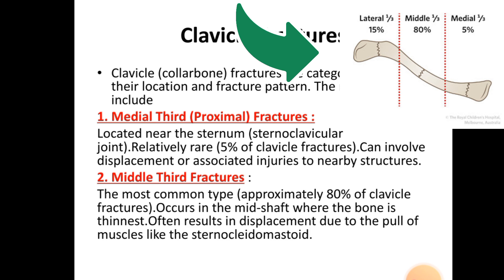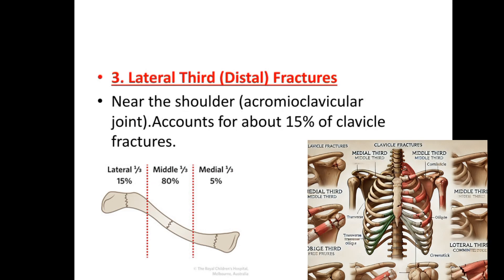Middle third fractures often result in displacement due to the pull of muscles like the sternocleidomastoid. The third type is the lateral third or distal fracture, located near the shoulder acromioclavicular joint, accounting for 15% of clavicle fractures.